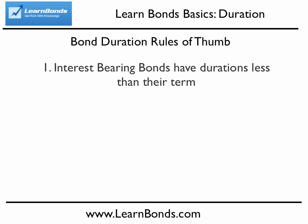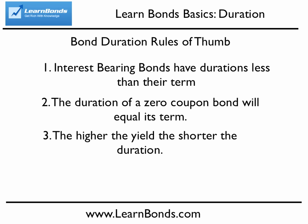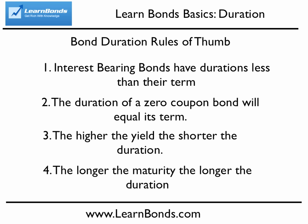Here are a couple rules of thumb for bond duration. Interest bearing bonds will have durations less than their term, or time to maturity. A zero coupon bond, or one that pays no interest, will have a duration equal to its term. Bonds with higher current yields will tend to have a lower duration than those with lower current yields, because an investor holding a bond with a higher current yield receives repayment for the bond faster. In other words, the higher the current yield, the lower the duration. Similarly, the longer the maturity, the higher the duration. That's our lesson for today.